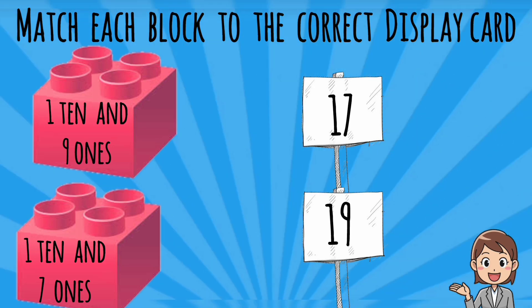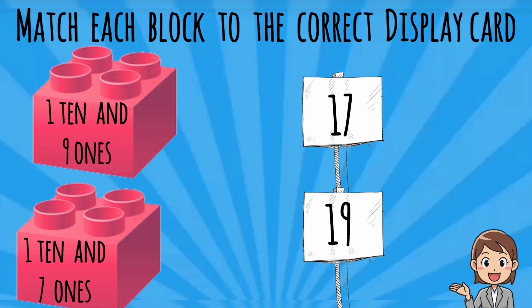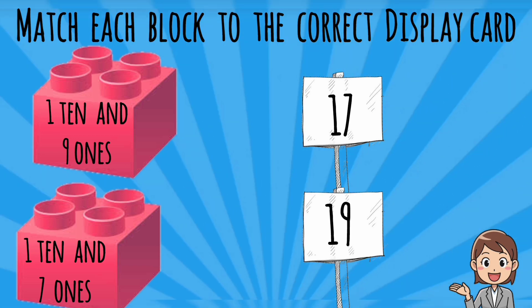Next question: match each block to the correct display code. Students, here there are two display codes given. The first display code is 17. Which block is suitable for 17? You know very well — seventeen contains one ten and seven ones. So this block is the suitable block. Draw a line and join this block and display code.